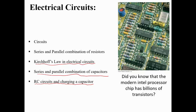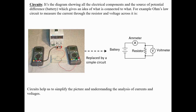Do you know that the modern Intel processor, or any chip processor, has billions of transistors fabricated inside it? You can't see those transistors with your eyes — you need a microscope. Transistors act as on and off switches which form logic gates, so modern electronics has become very advanced. But here we're just going to study some fundamental aspects of circuits.